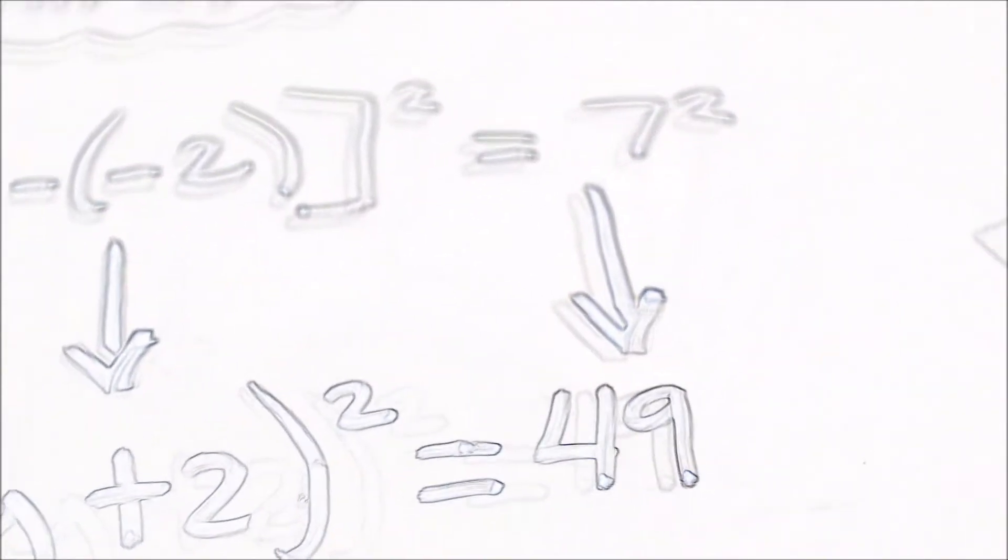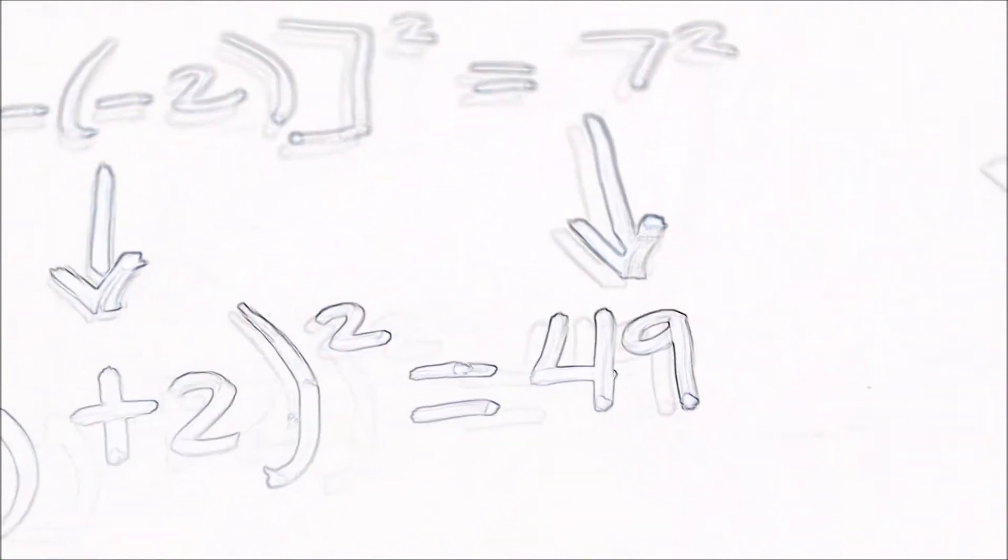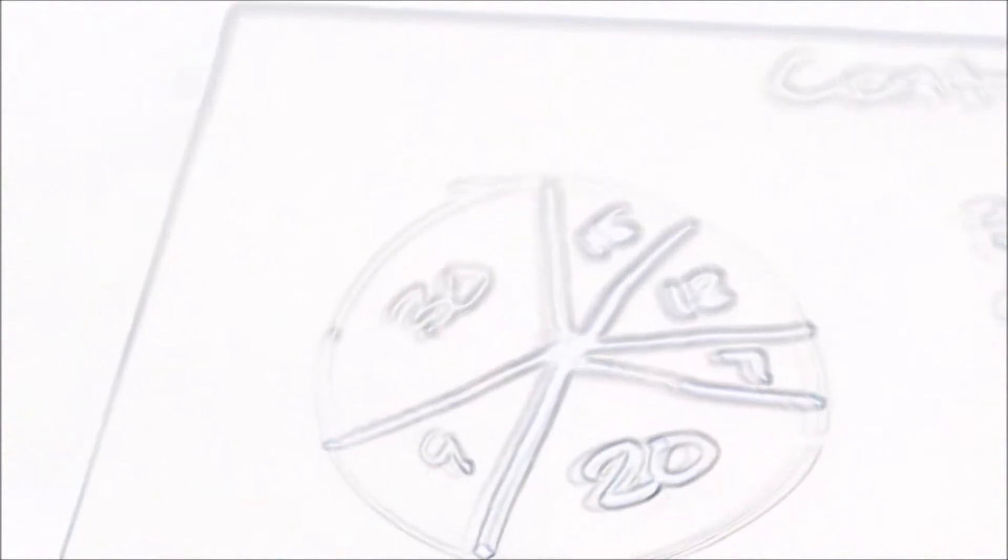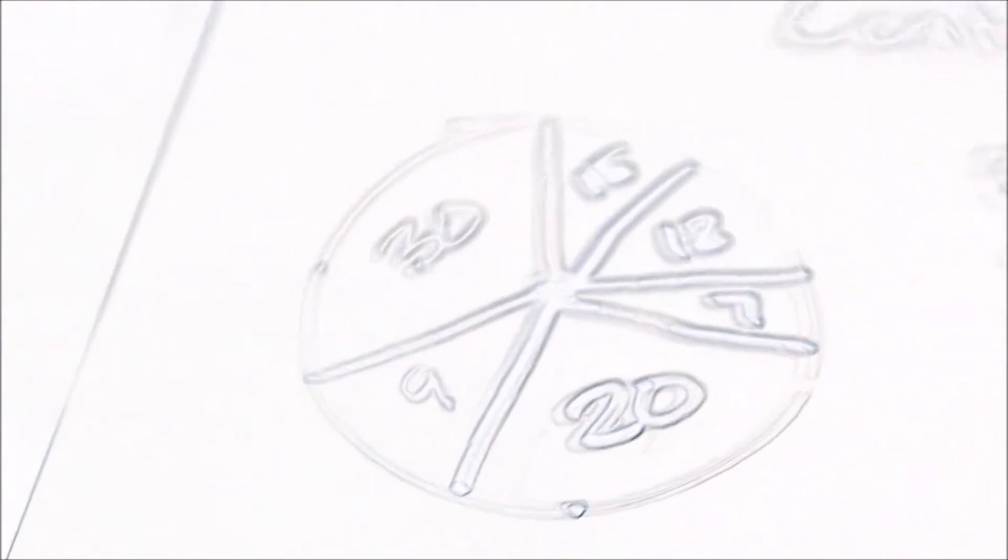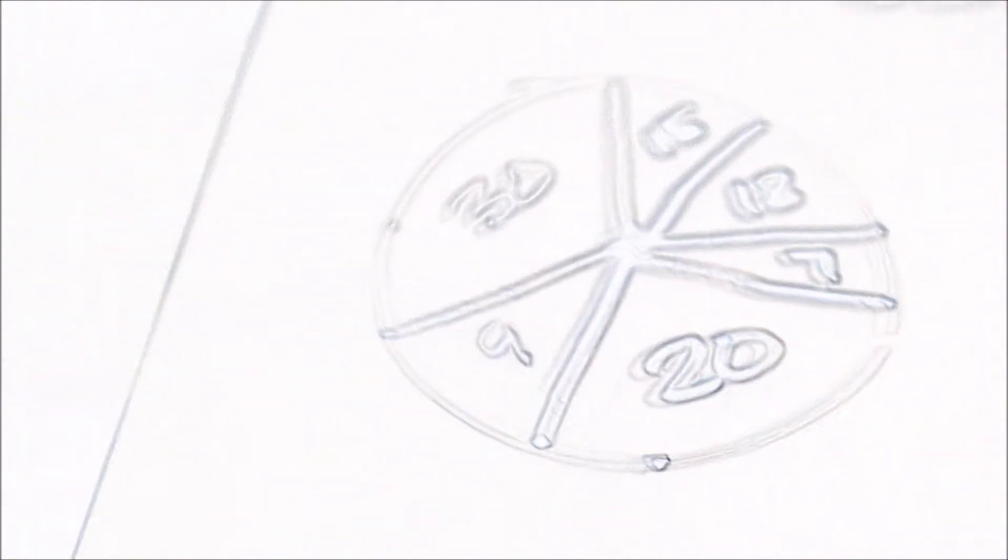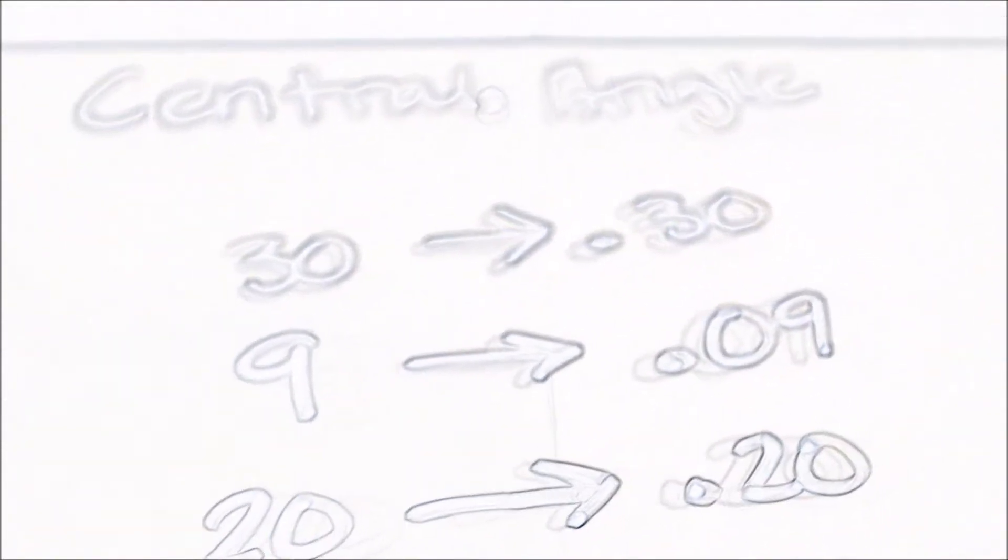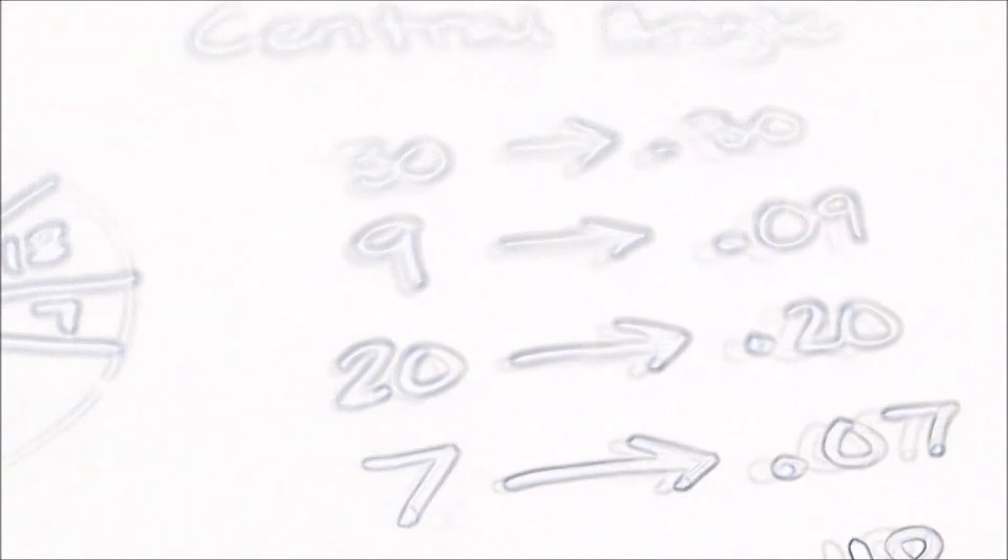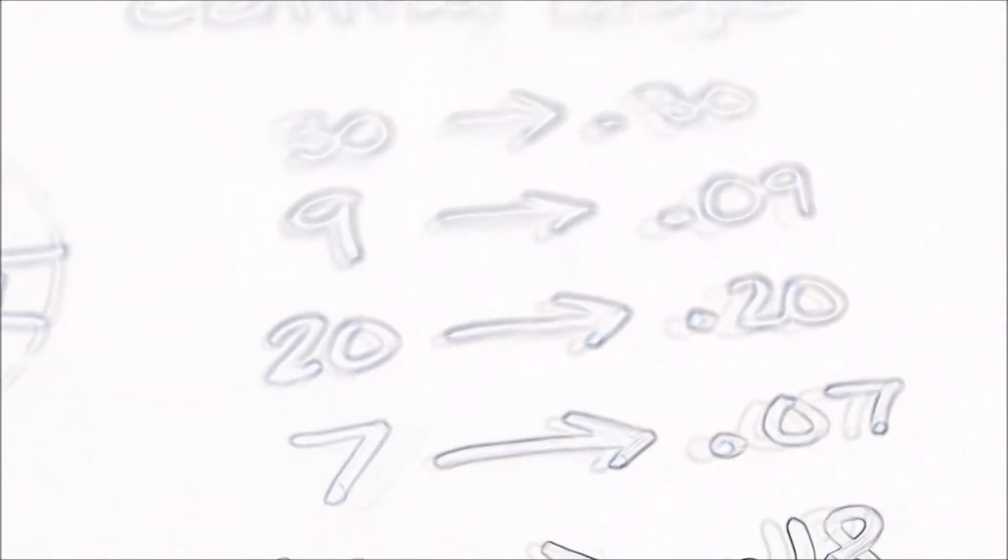And the 7 to the second power equals 49. The next example will be about central angles. This is a diagram and in each number in the diagram, you must turn it into a decimal. So 30 will be .30, 9 into .09.